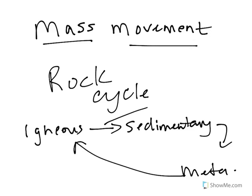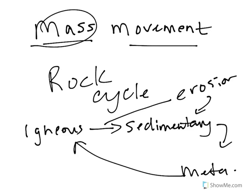This erosion process is critical in making our sedimentary rocks. One way that we can break down igneous, metamorphic, or sedimentary rocks to make sediment is through mass movement. So this chapter is really crucial in the sedimentary step of the rock cycle.